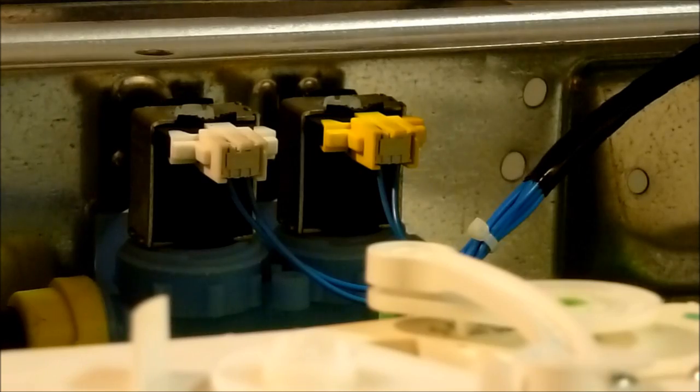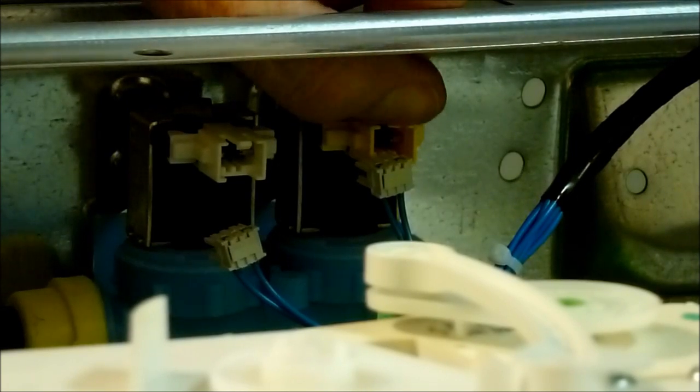Next on the inside of the washer, I'm going to go ahead and release the two connectors for the water solenoids. So, I've just released them. There's a tab on the top of each one. If you just lift the tab up slightly, the connectors will pull straight out.